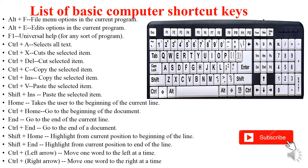The first one is Alt+F1, which means the file menu options in the current program. Then Alt+E means the edit option in the current program — any worksheet you type, pressing Alt+E opens the edit option.